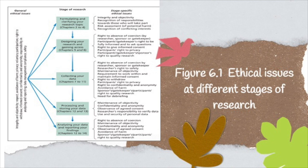Figure 6.1 shows the ethical issues at different stages of research. Ethical issues are likely to be important throughout your research. This will require ethical integrity from you in relation to your role as the researcher, any organisational gatekeepers involved, and where appropriate, your research sponsor. Ethical issues need to be anticipated and considered from the very start of your research project — from the time you start to think about the choice of your research topic. Each potential research topic will be associated with a number of possible ethical concerns.